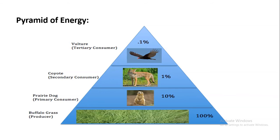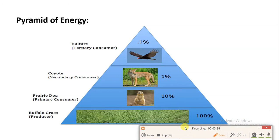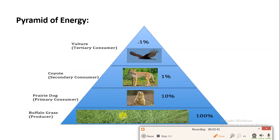Now let's talk about the pyramid of energy. Whatever energy is trapped by the plants through the process of photosynthesis — let's imagine that is 100% energy which the plants have. Then in the next trophic level, the energy available is reduced. And at the third trophic level, it is further reduced.